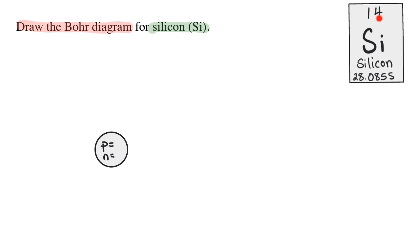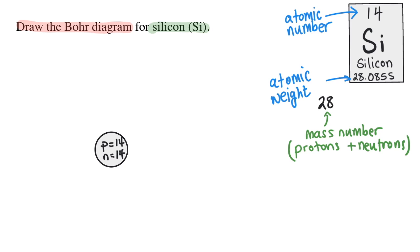Silicon has 14 protons. I know that because its atomic number is 14. It also has 14 neutrons. I know that because I round the atomic weight to the nearest whole number. This represents the number of protons and neutrons added together. It's called the mass number. So if I subtract the number of protons from this mass number, then I know the number of neutrons.